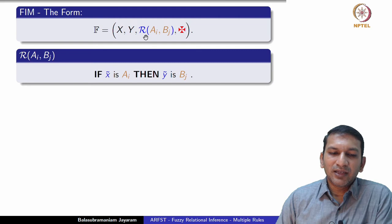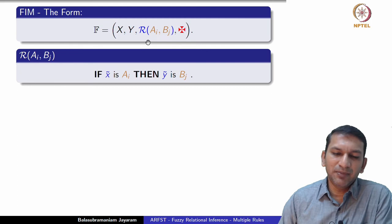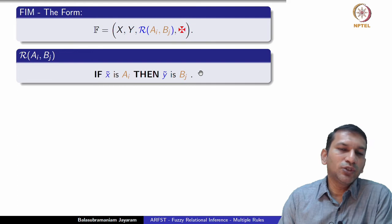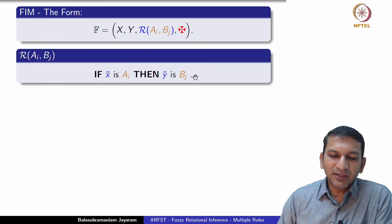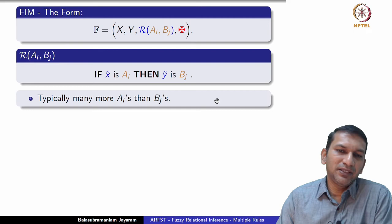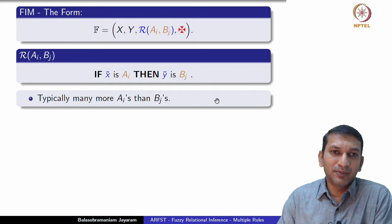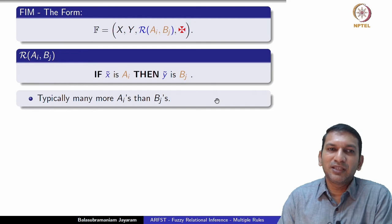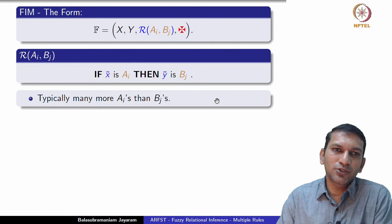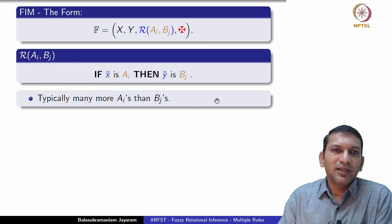We have always written the general form with a rule base because we abstracted it from the general schema. We already handle multiple rules even though we discussed only single rule cases. We indicate antecedents as Aᵢ and consequents as Bⱼ — the index sets can differ. Typically we have more Aᵢ's than Bⱼ's, since we want the inference mechanism to function as a mapping from F(X) to F(Y). If there were fewer antecedents than consequents, there could not be a valid mapping. Typically the cardinality of I is greater than the cardinality of J.